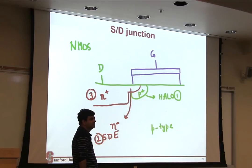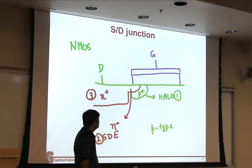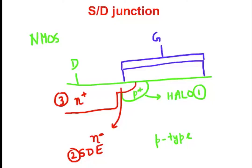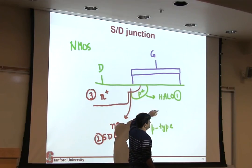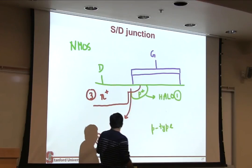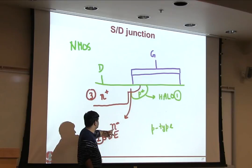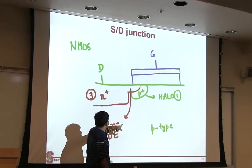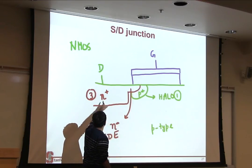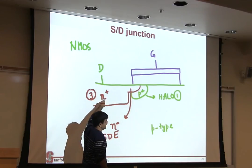The next step after gate patterning is to form your source and drain junction, so you need implants — more than one implant. There are three essential implants which are needed. One is called a halo implant. So if it's an NMOS, made on a P-type substrate, this halo implant is of the same type — it's a P-plus implant. Then you do a source-drain extension implant, which is of the opposite polarity: an N-minus implant — minus meaning low doping. And then finally you have the source-drain large region, which is an N-plus implant.